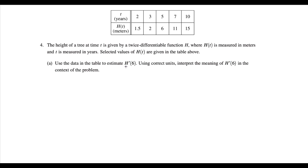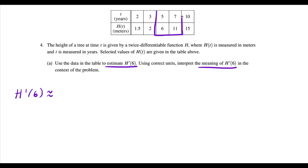For part A, we have to do two things. We're going to estimate h prime of six, and then we're going to interpret the meaning of this in the context of the problem. If we want to approximate h prime of six, we're going to pick two values of t that are really close to six, something like five and seven. So these are going to be the points we use to approximate the instantaneous rate of change.